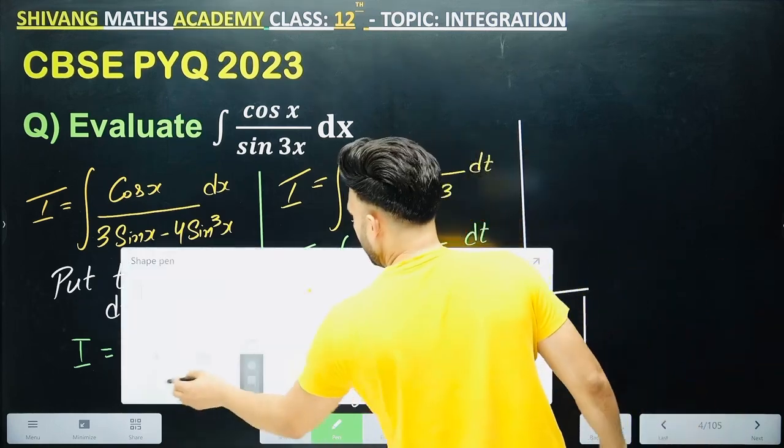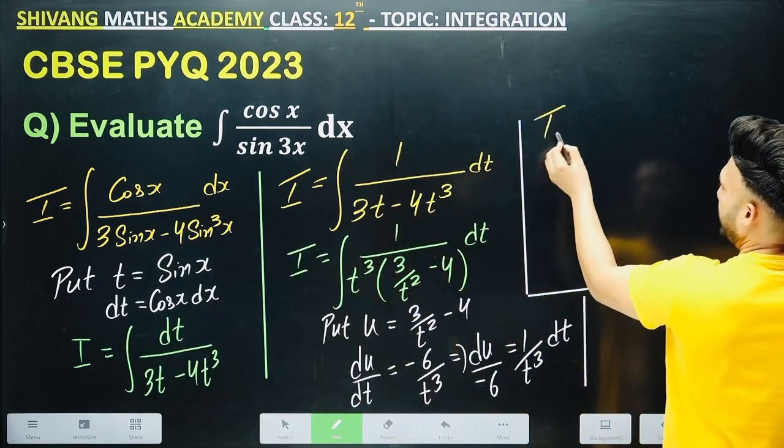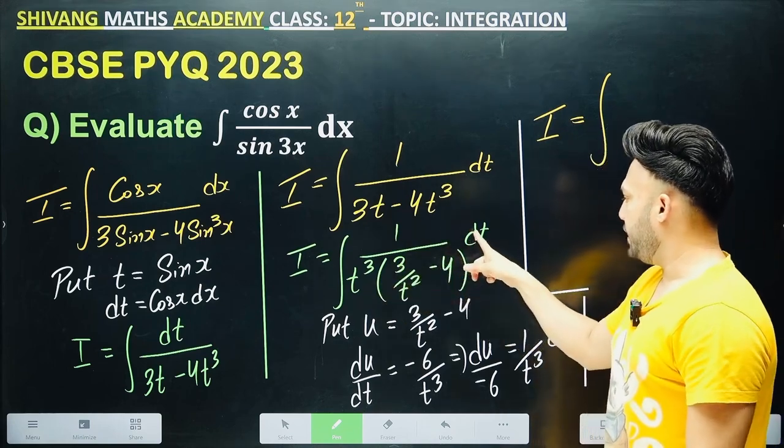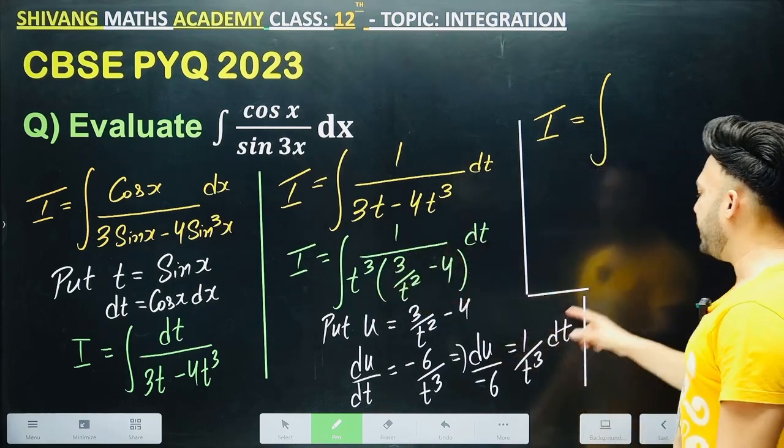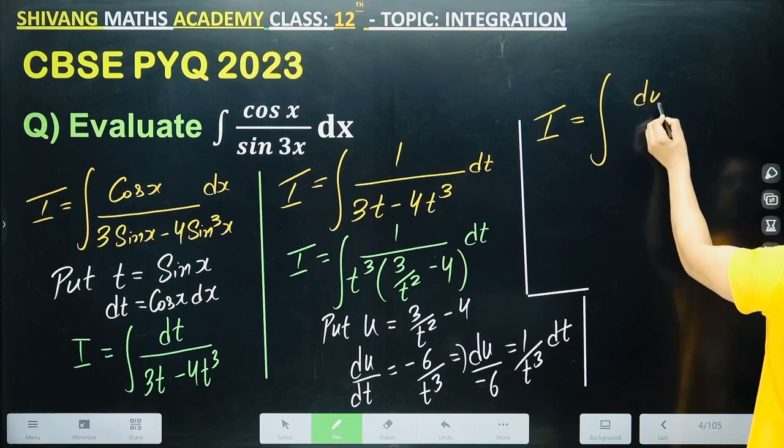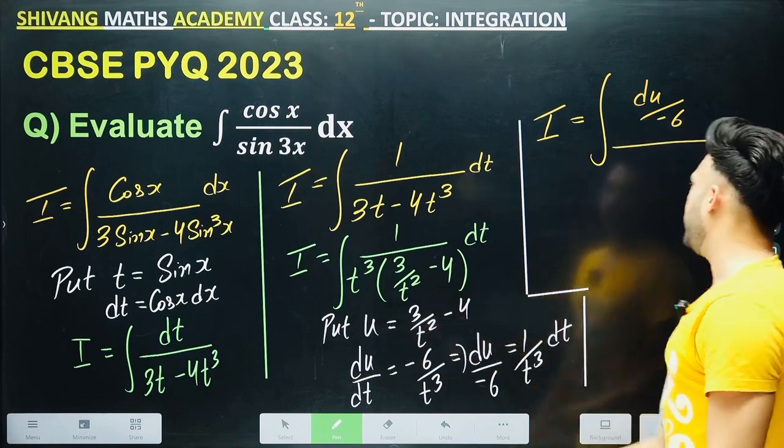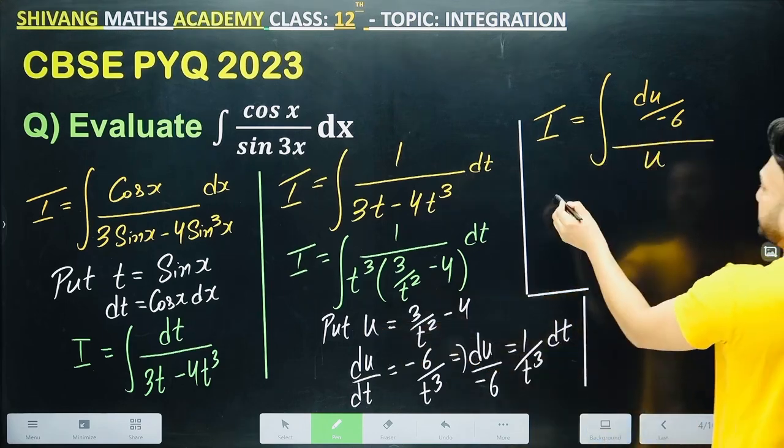Now bring minus 6 here. So see what will happen. What should you write first? Look at the integral 1 over t dt. Its value log t and then C. T squared minus 4 was taken as u.